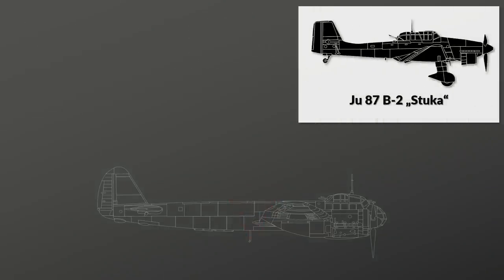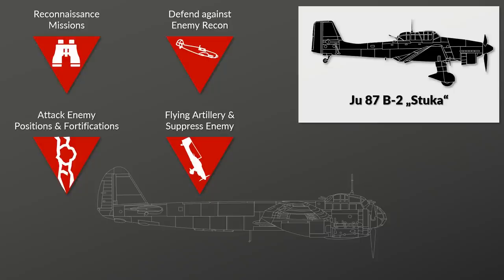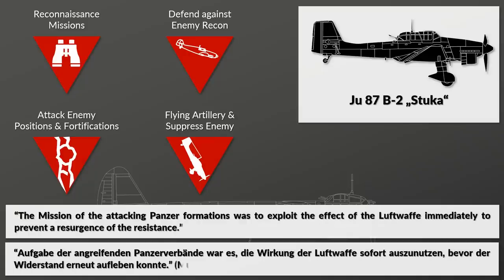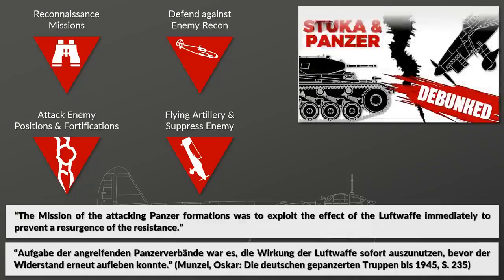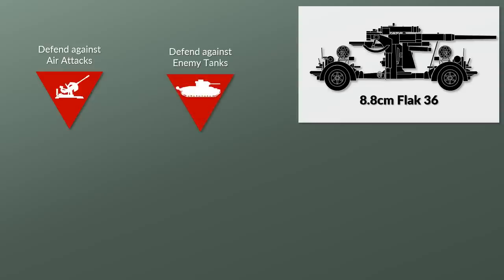The job of the Luftwaffe and liaison air units was to provide reconnaissance on enemy troops and terrain, and also to defend the assembly area against enemy recon and attacks. During the offensive, air units would attack enemy troops moving into position or strengthening the defense. Additionally, known positions and fortifications would be attacked by Stukas and other units — in that way, air units could be used as flying artillery to suppress the enemy. As noted by Oskar Munzel, a Panzer General, the mission of the attacking Panzer formations was to exploit the effect of the Luftwaffe immediately to prevent the resurgence of resistance. Finally, the Flak units — the anti-aircraft units — would protect against enemy air attacks during the assembly and attack, and additionally protect against enemy tank attacks as well. One source specifically notes that the Flak does especially well against heavy tanks.